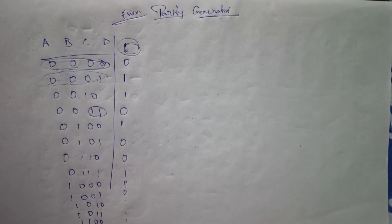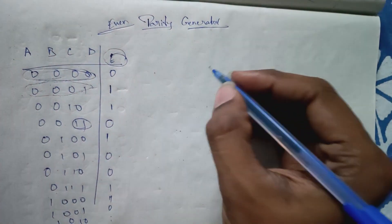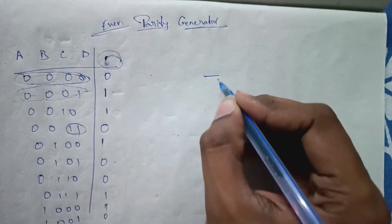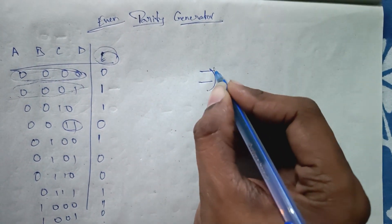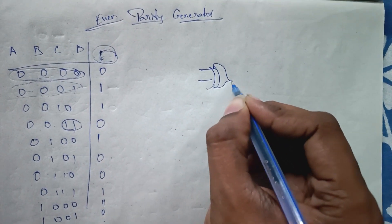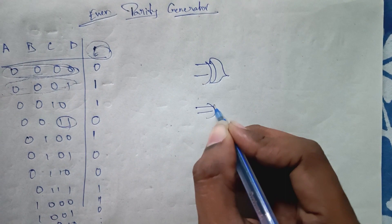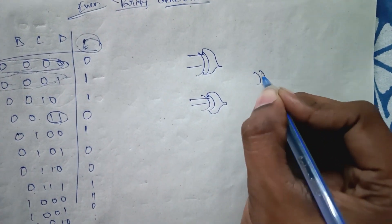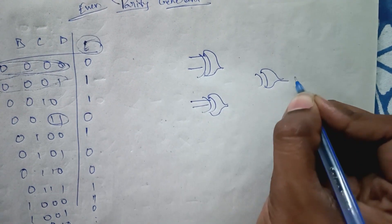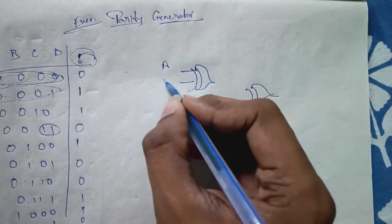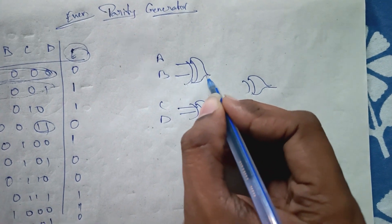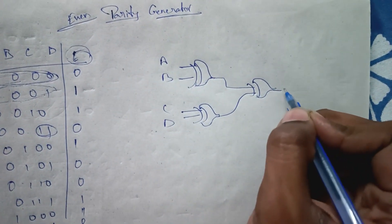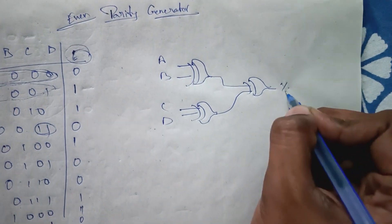In order to implement this function, we require three XOR gates: XOR gate 1, XOR gate 2, and XOR gate 3. The inputs are A, B, C, D. The intermediate XOR outputs are fed forward, and the final output comes from the last XOR gate.